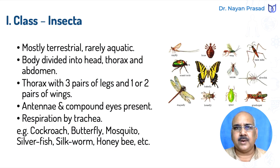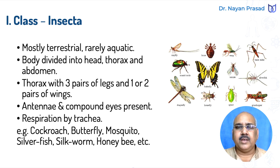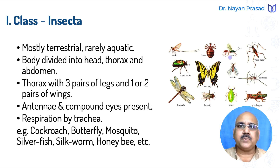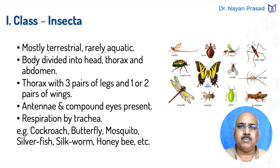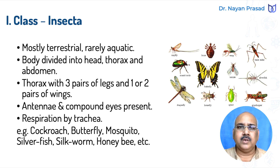First, class Insecta — the major group of phylum Arthropoda. Insects include a large number of individuals: Mayfly, Dragonfly, Beetle, Louse, Bedbug, Wasp, Water Spider, Silverfish, Termite, Butterfly, Silk Moth, Housefly, Honeybee, Aphid, Grasshopper, and more. So these are the different common examples of Insecta.